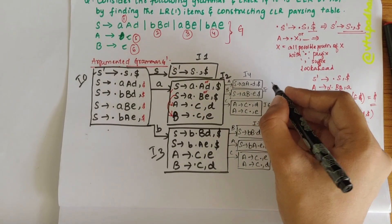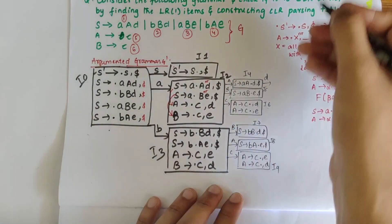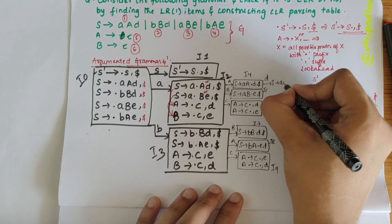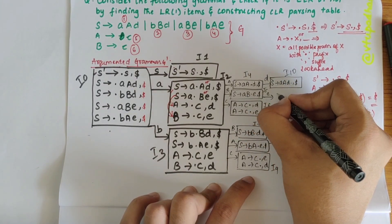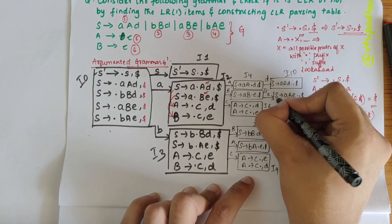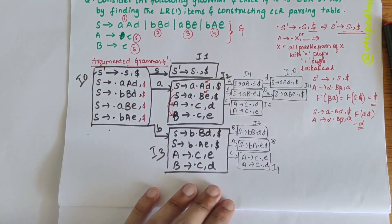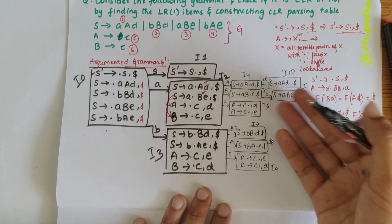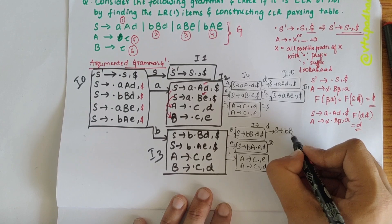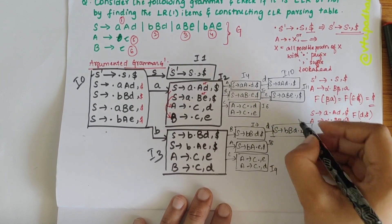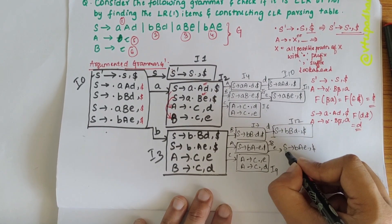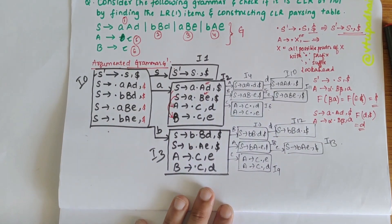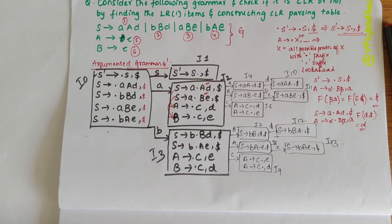From I4, over d I shift the dot right to get S → AAd•, $ — this is I10. From I5, over small e I get S → ABe•, $ — this is I11. From I7, over d I get S → BBd•, $ — this is I12. From I8, over e I get S → BAe•, $ — this is I13. I am done with construction of the augmented grammar and item sets.